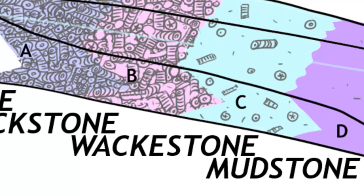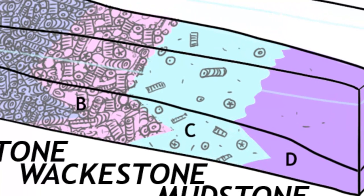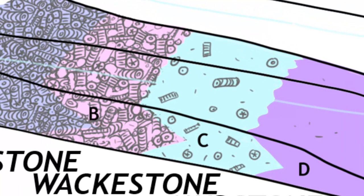So the sort of arrow shapes to the different tongues of sediment of the different facies have tracked seaward and then tracked back landward over the course of geologic time.